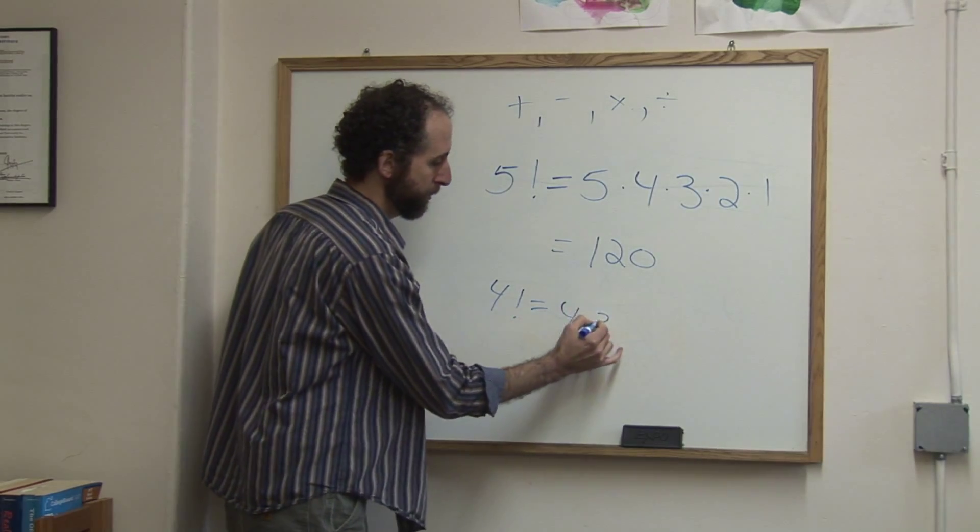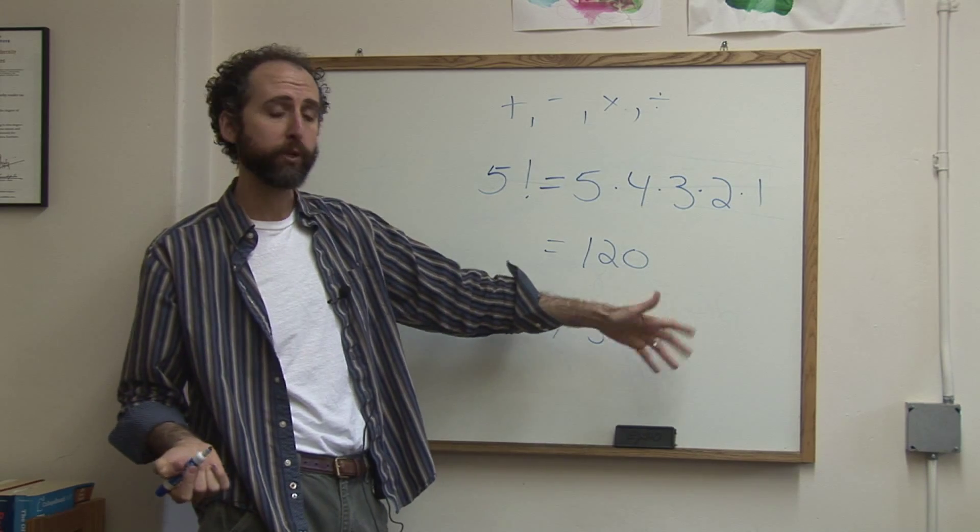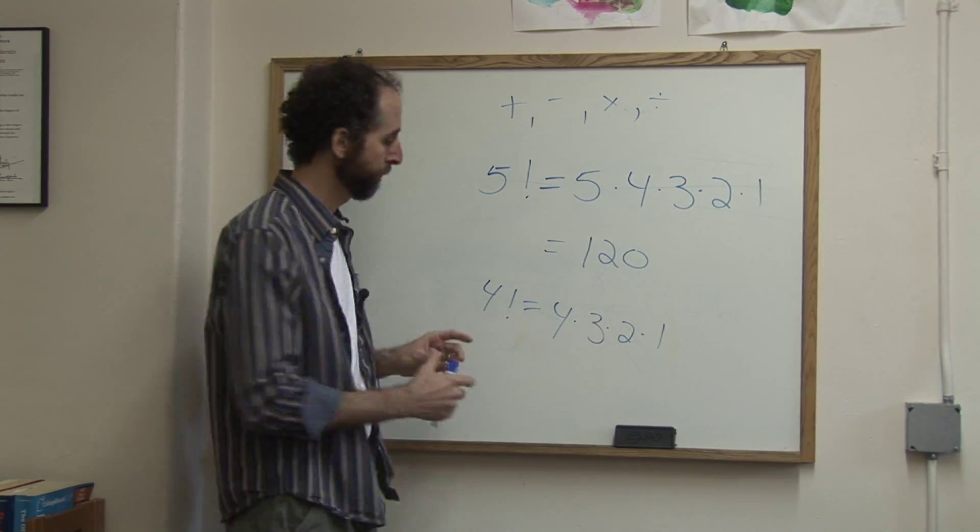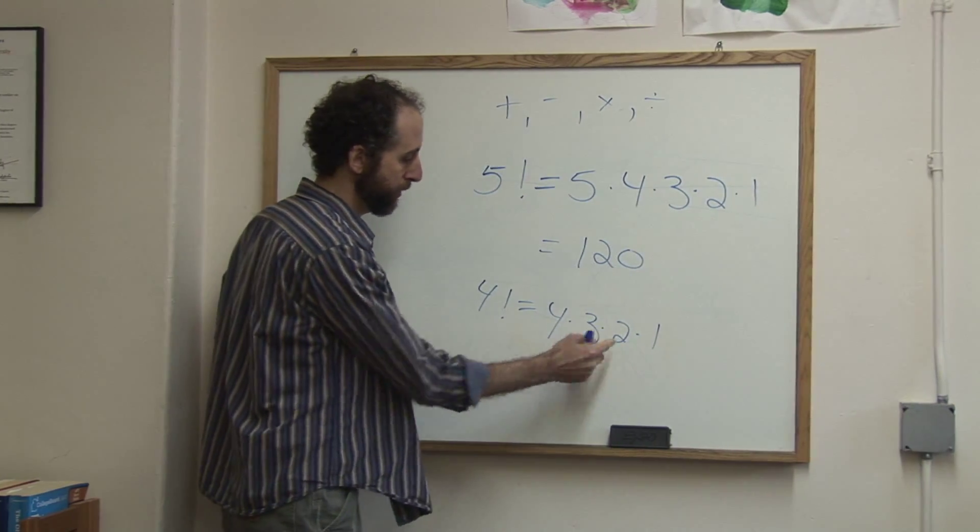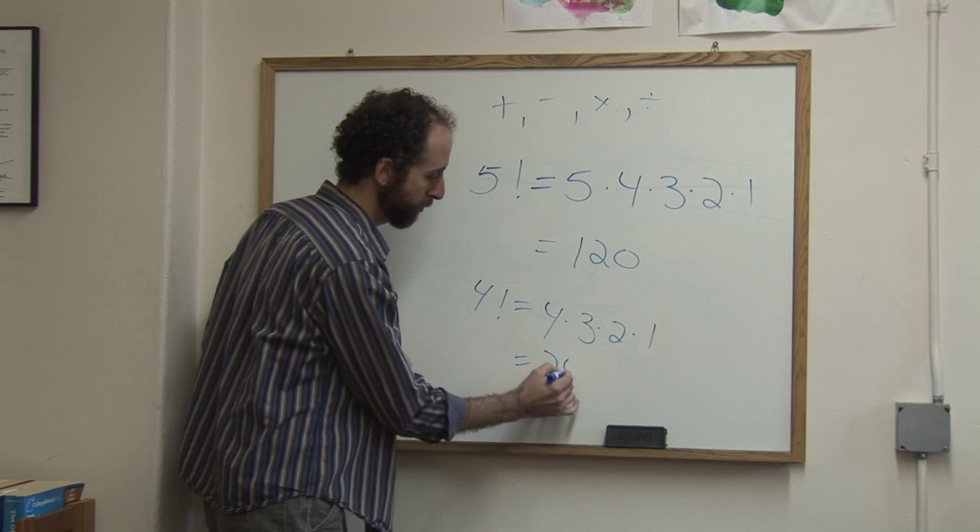So it's 4 times 3 times 2 times 1. We also don't include 0, because if we included 0, then it would equal 0. Any factorial would be 0. So 4 times 3 is 12, times 2 is 24. So 4 factorial is 24.